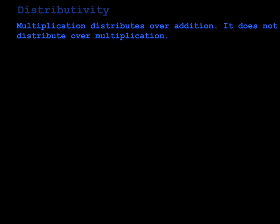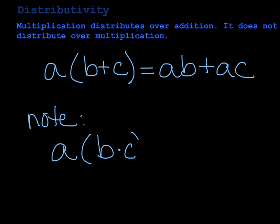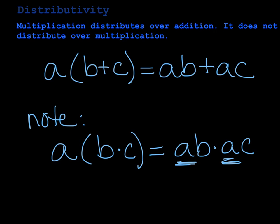The last thing we're going to talk about is distributivity. Multiplication distributes over addition, but it does not distribute over other multiplication, and there's no distributive property of addition. The distributive property says that a times (b plus c) equals ab plus ac. Note: if you have a times (b times c), that does not equal ab times ac — you'd get an extra a that doesn't belong. So make sure you know it's only over addition.